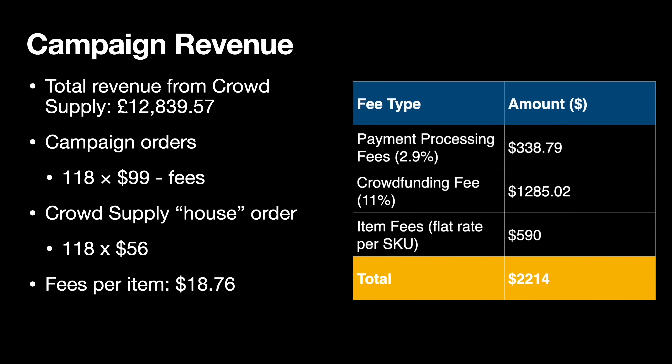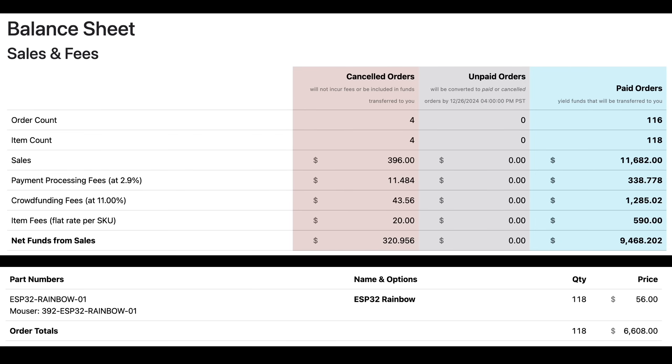Campaign revenue. There's quite an important distinction on Crowd Supply that some people are not aware of. If you order during the campaign phase, the creator gets the full price — $99 minus various fees. For pre-orders post-campaign, Crowd Supply places a house order at the distributor price, which in my case we worked out as $56. In the campaign I got 118 orders, and then Crowd Supply placed another order for another 118 units. This really pushes up the number of units you get manufactured, which makes a big difference to your unit cost. The fees per item worked out at $18.76, which gets knocked off the $99 price. You can see the campaign orders, the fee breakdown, and Crowd Supply's house order at the distributor price of $56 in my dashboard screenshots.